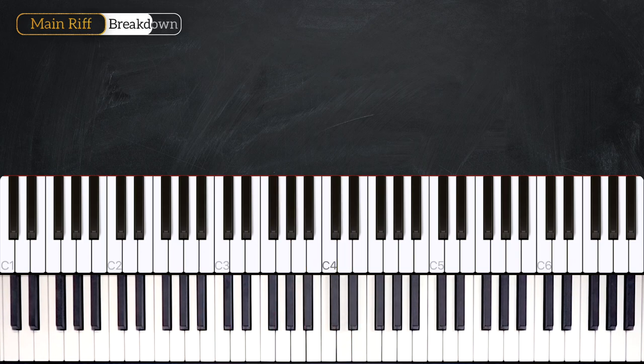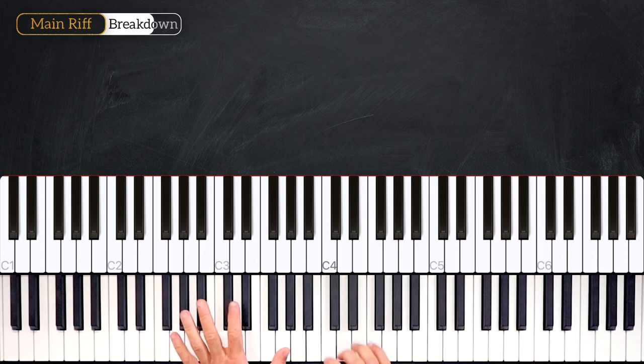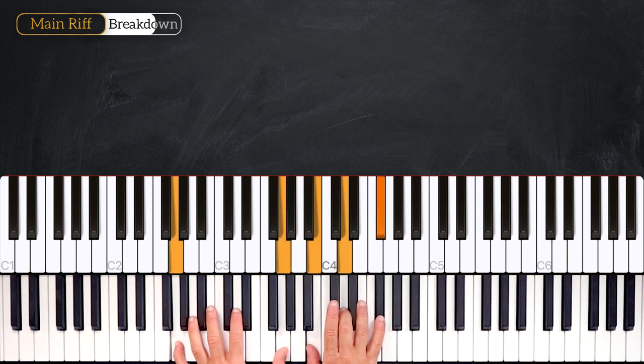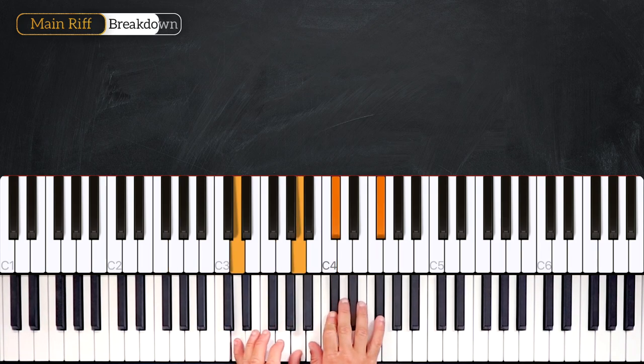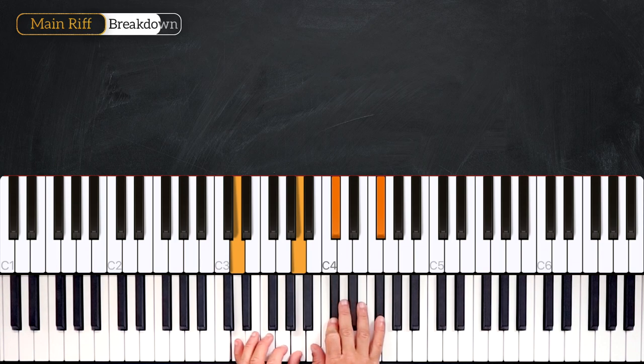Alright, so let's break down what happens in the main riff. So we'll start by playing the G major 7, then right after we'll play the D major 7. And we'll go back and forth between those 2 chords, 3 times.